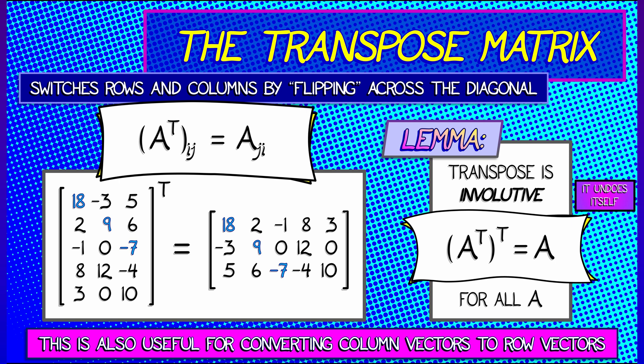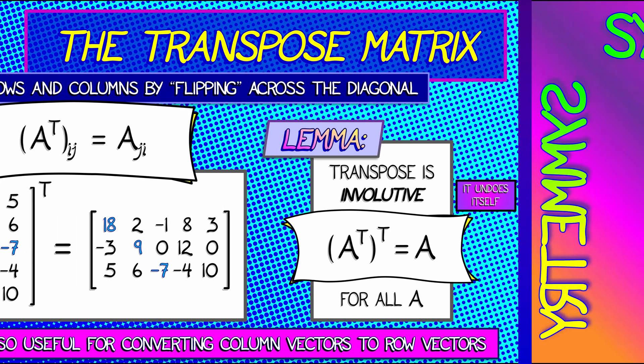Now, the transpose is used all over the place. It's used for converting column vectors to row vectors and vice versa because it's involutive.